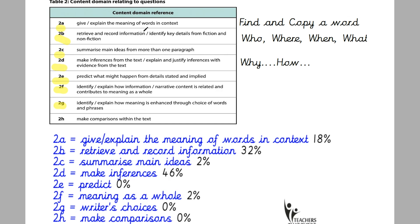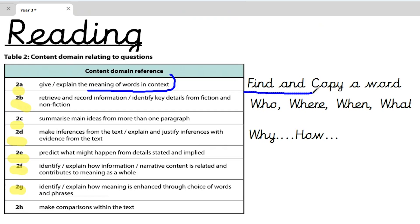Content domain 2a is all about children knowing and understanding the meaning of different words, and giving them strategies on how to work out meanings of words they don't know. Not just looking at the dictionary, but actually reading around the word, swapping it for another word, or seeing if there are words within words that can help them — really unpicking vocabulary and building it up. A lot of these questions will start with the phrase 'find and copy a word that means.'